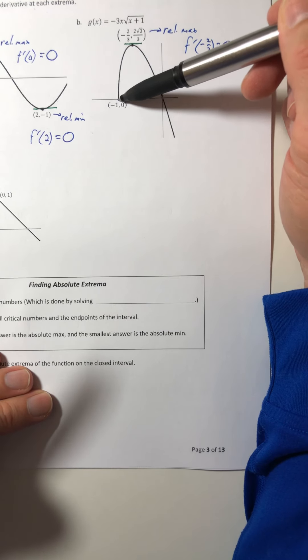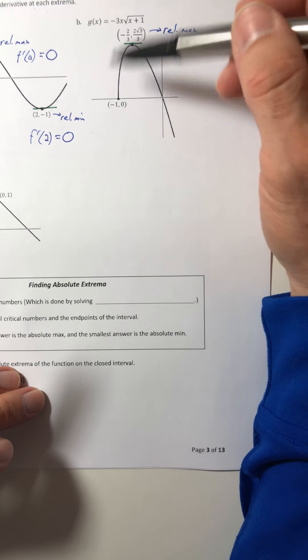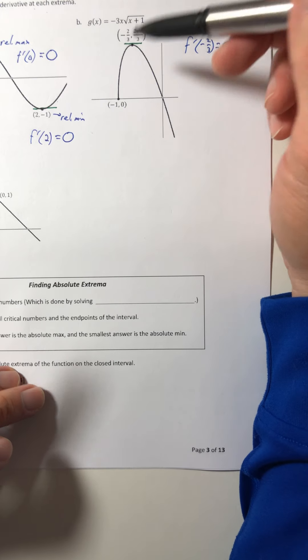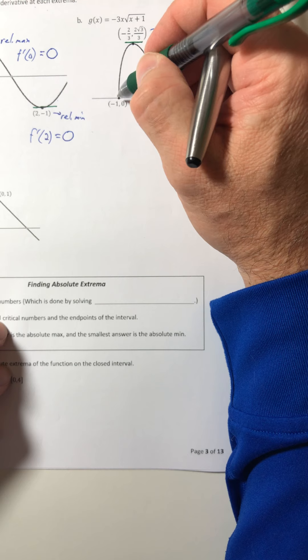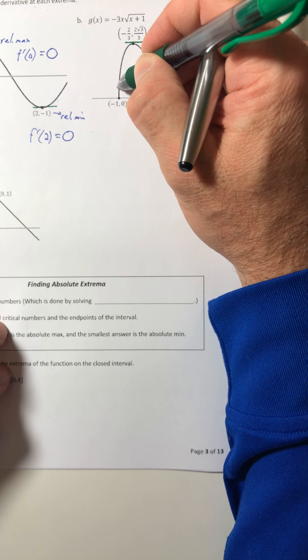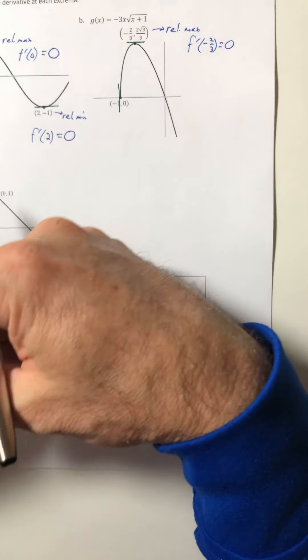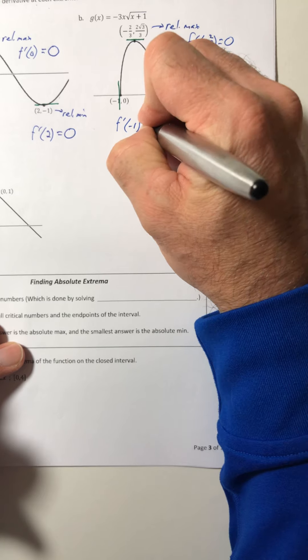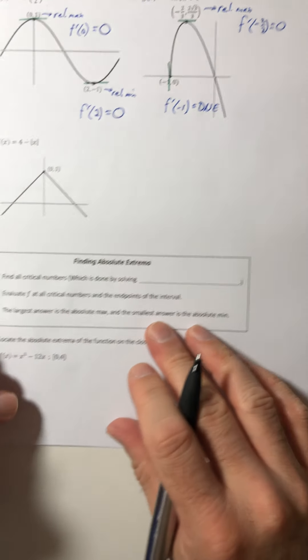Okay, now this point right here, it's not a relative max, and it's not a relative min. It's not at the top of a hill, nor is it the bottom of any valley. But we could still get a tangent line going. And if you look at it, the tangent line is really vertical. So f prime of negative one does not exist. It's undefined.